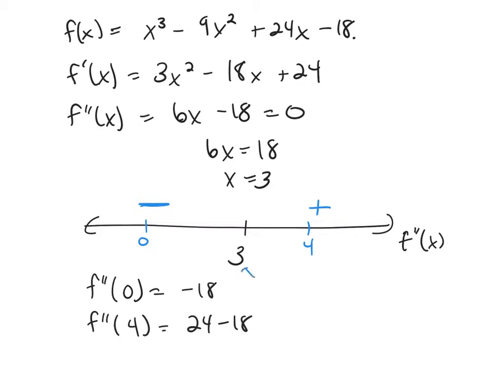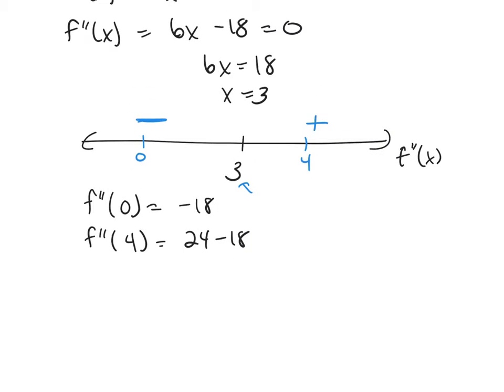So right here, I do have an inflection point. So we need to go back to our original function and plug in 3 into your function. And it'll be 3³ - 9(3²) + 24(3) - 18, which works out to be 0.